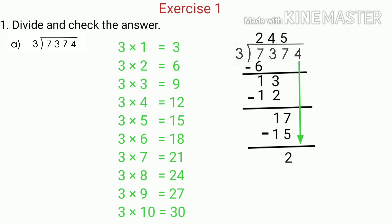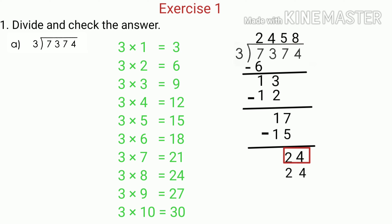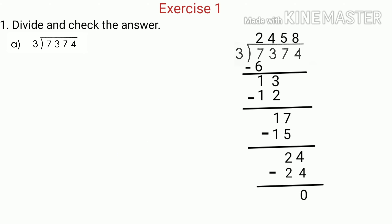Now we bring down the last digit, that is 4, and the number becomes 24. Since 24 is greater than 3, we divide 24 by 3 — finding how many times of 3 is equal to or nearest to 24. We know that 8 times 3 is equal to 24. So we write 8 as the quotient above 4. Since 3 multiplied by 8 is 24, we write 24 below and subtract — 24 minus 24 gives us 0. Since there are no more digits to bring down, the division is done.